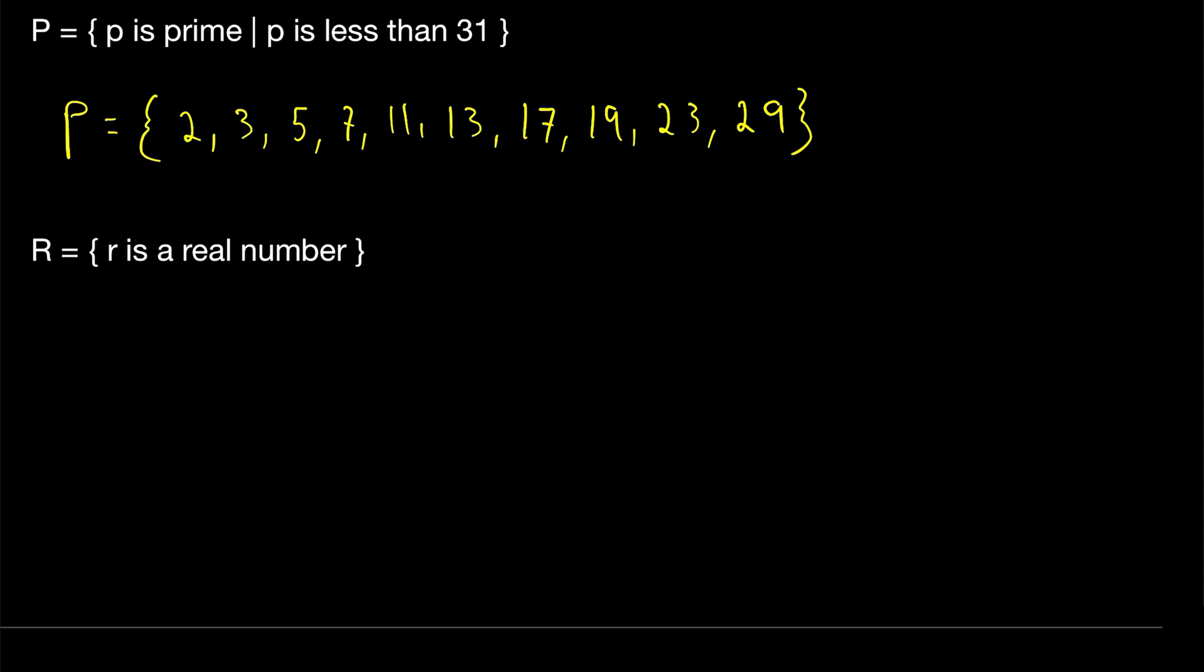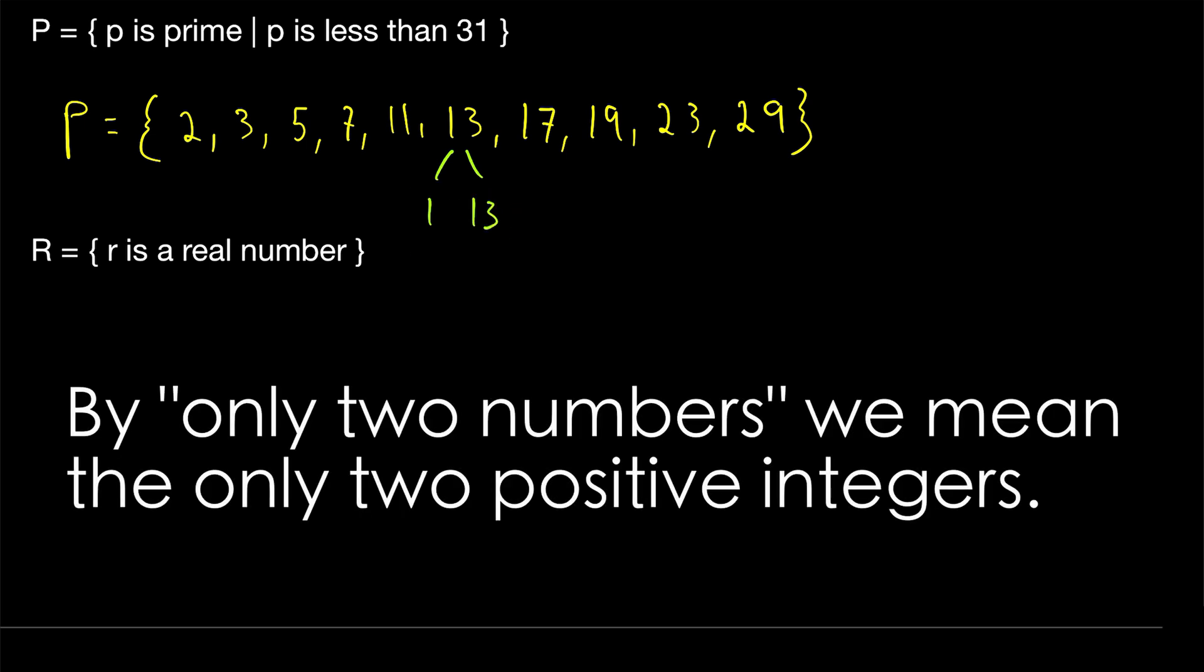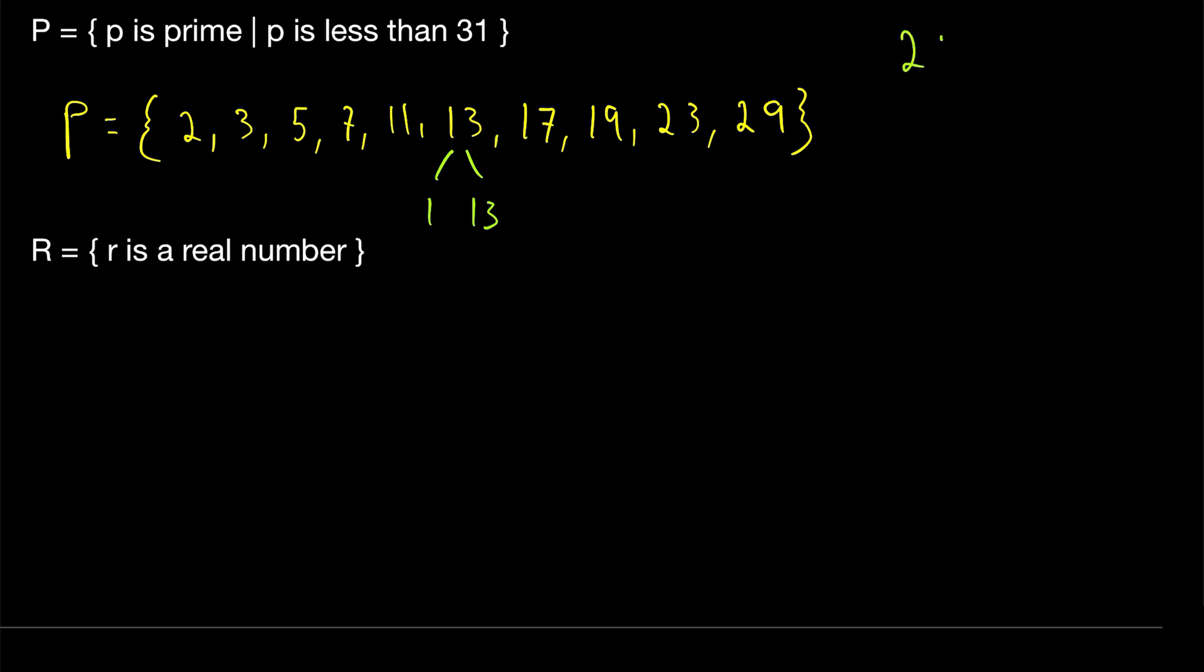Just to make sure we're clear on primes, again, these are integers greater than one whose only factors are one and themselves. For example, the only factors of 13 are one and 13. Those are the only two numbers you can multiply together to get 13. A number like 27 is not prime because it has factors other than one and itself, like three and nine. With that said, what is the cardinality of our set of primes that are less than 31? Well, cardinality is just the number of elements, so we just have to count them up. 1, 2, 3, 4, 5, 6, 7, 8, 9, 10. So the cardinality of P is equal to 10.